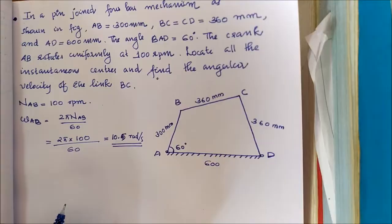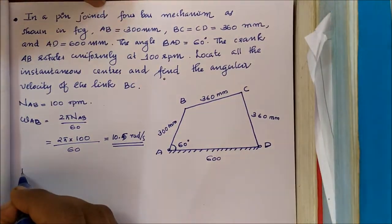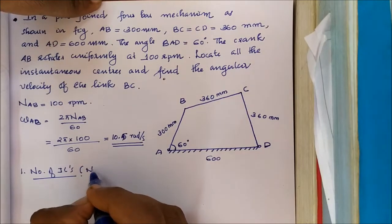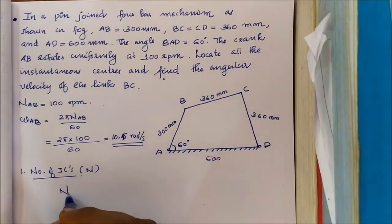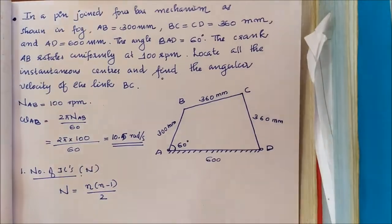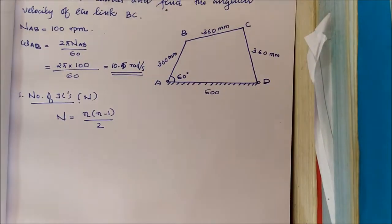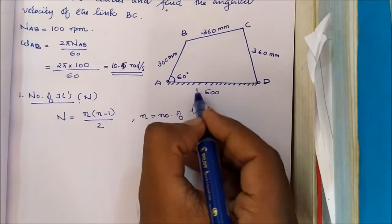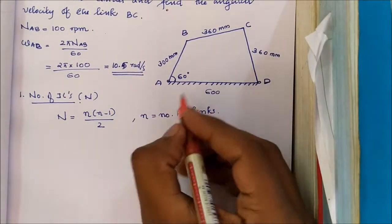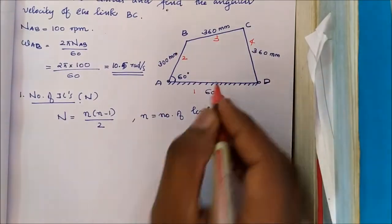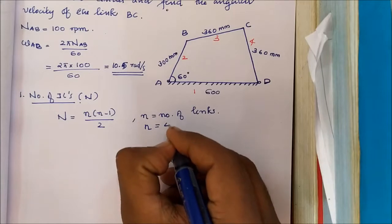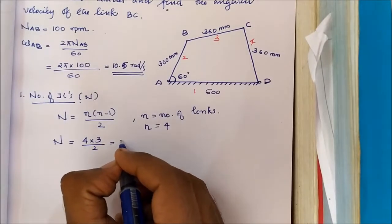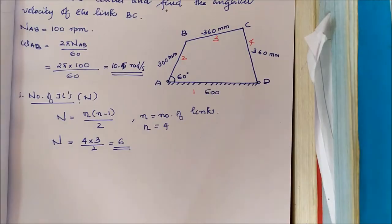The first step is to find the number of instantaneous centers. The number of instantaneous centers capital N is equal to n times (n minus 1) divided by 2, where small n is the number of links. The number of links is 4, so N equals 4 times 3 divided by 2, which equals 6.